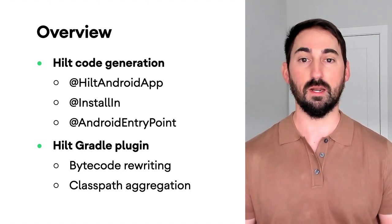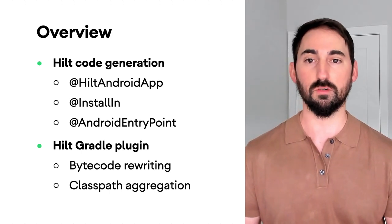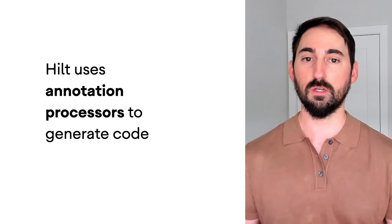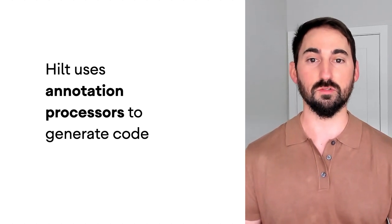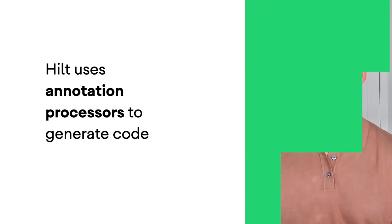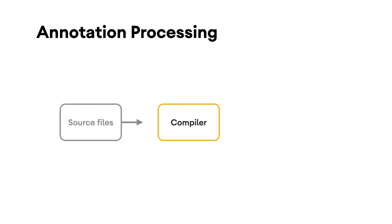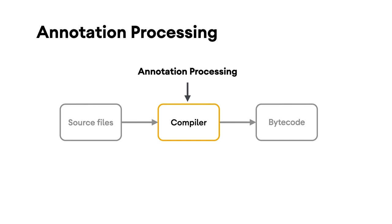Let's start by taking a look at how Hilt generates code. As some of you probably already know, Hilt uses annotation processors to generate code. Annotation processing occurs within the compiler when converting your source files into Java bytecode. Annotation processors are triggered on the annotations within your source files, and typically inspect annotations and types to perform various tasks like validation or generating new sources.